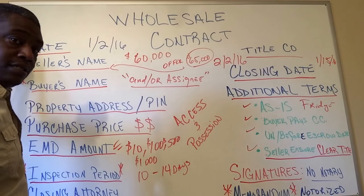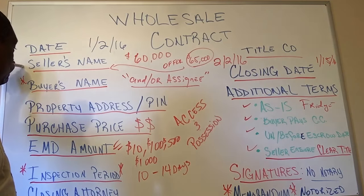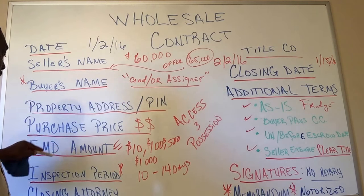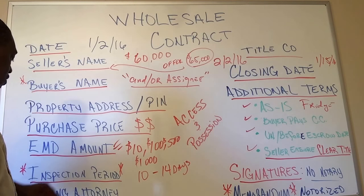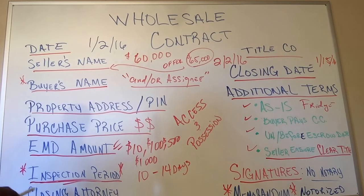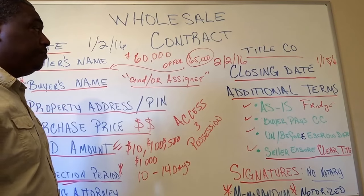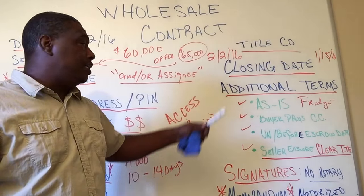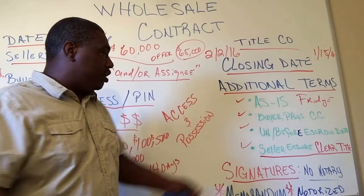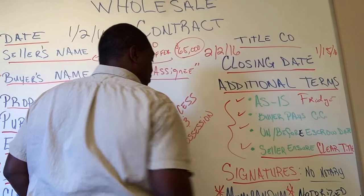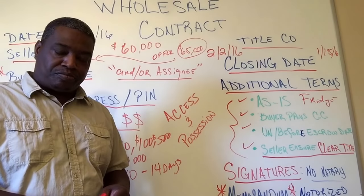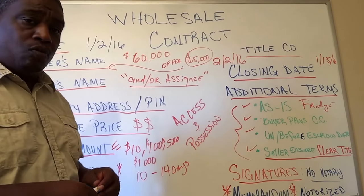Just to recap: you need the date, seller's name, buyer's name, property address and property identification number, purchase price, earnest money deposit amount, inspection period — very critical — closing attorney and title company, closing date, additional terms and conditions section with all agreed-upon terms, and signatures. Also file the memorandum of agreement.